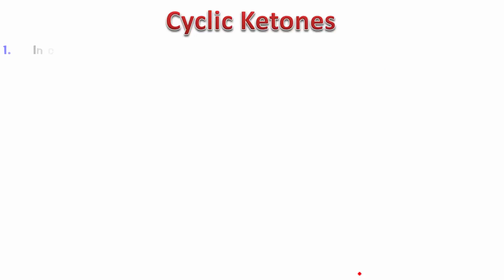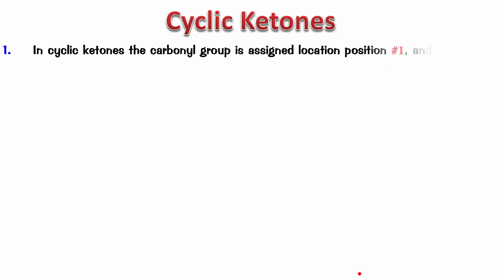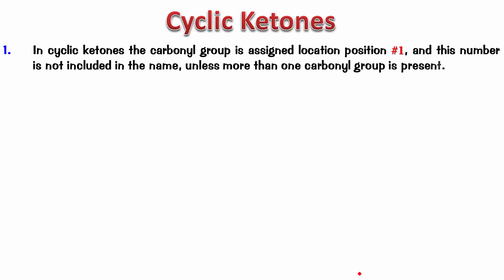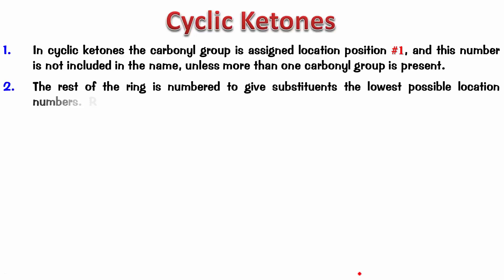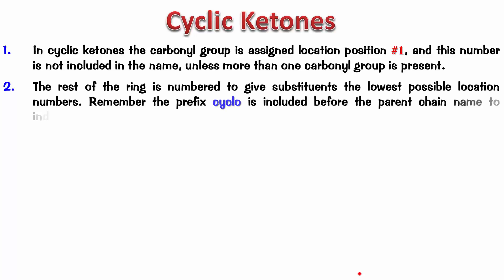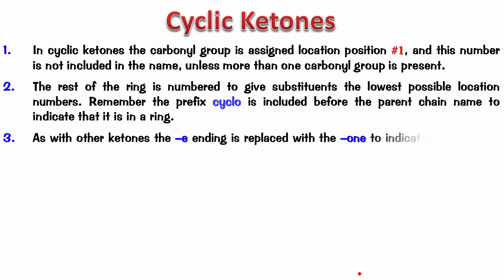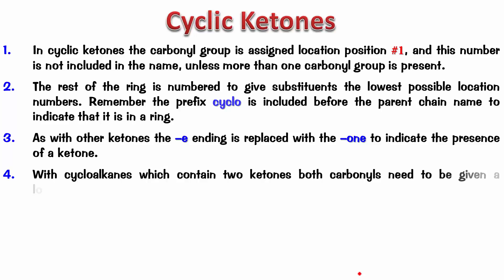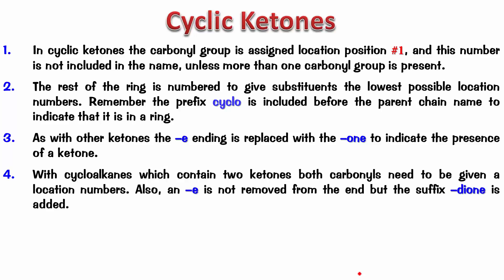So let's check out the rules. For cyclic ketones, the carbonyl group is assigned position number one, and this number is not included in the name unless more than one carbonyl group is present. The rest of the ring is numbered to give substituents the lowest possible location numbers, and we add the prefix cyclo. We remove the E from the alkane ending and replace it with -one. When more than one carbonyl group is present, it's called a dione or trione, and the name becomes cycloalkane-p,q-dione where p and q represent the positions of the carbonyl carbons.